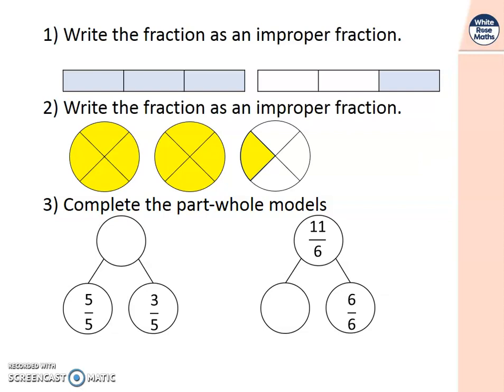Let's have a look at those answers. Write the fraction as an improper fraction. As you can see, each bar, each whole bar is split into 3. Here I've got 1, 2, 3 of them. And one more makes 4 thirds.